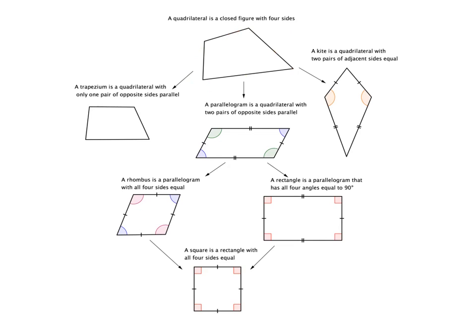There are some special types of quadrilaterals that we like to study. A trapezium is a quadrilateral which has only one pair of opposite sides parallel — I'm going to indicate the parallel sides with arrows. So this is a trapezium: it has one pair of opposite sides parallel.